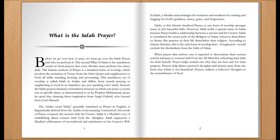The second pillar of Islam is the mandatory round of ritual prayers that every Muslim must perform five times daily. The Islamic method of prayer is a ritualized form of worship, which involves the recitation of verses from the Holy Quran and supplications to God, all while standing, bowing, and prostrating.